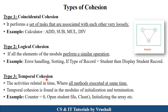The next type is temporal cohesion, where all methods in a module are executed at the same time. For example, in a file organization program, you open a student file — the file opens. Then a clear function clears all unused or garbage variables from the program, and the array is initialized. All these operations are performed at the same time — this is called temporal cohesion.